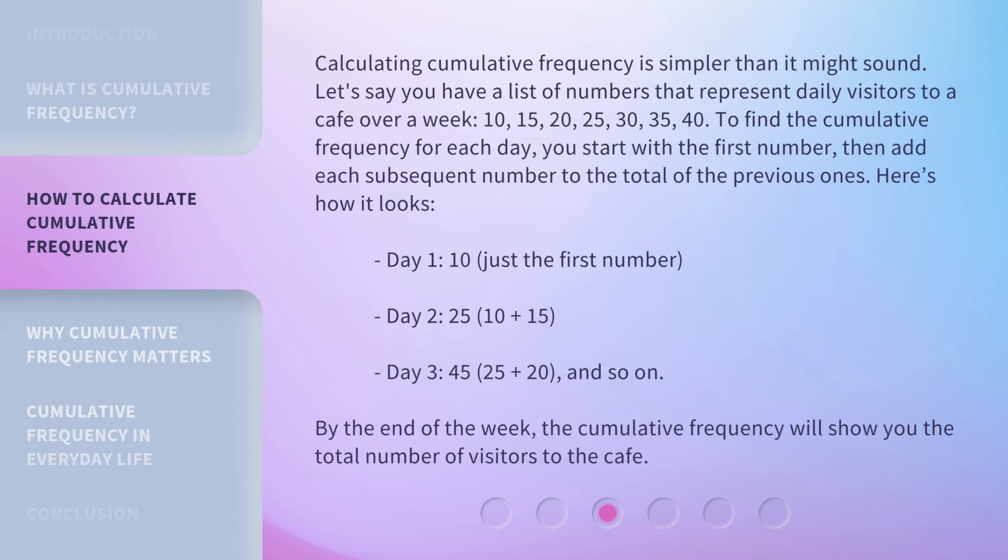Calculating cumulative frequency is simpler than it might sound. Let's say you have a list of numbers that represent daily visitors to a cafe over a week: 10, 15, 20, 25, 30, 35, 40. To find the cumulative frequency for each day, you start with the first number, then add each subsequent number to the total of the previous ones. Here's how it looks.